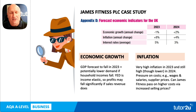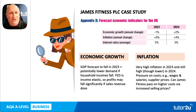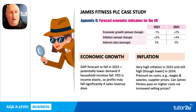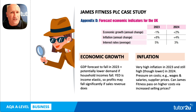Going back to the case study, this is a good example of how we can use appendix data to help provide context. The question explicitly asks us to use that data here. Appendix D had some forecast economic indicators for the UK. It made reference to two in particular. Economic growth — the annual change in GDP — is forecast to be minus 1% in 2023, so a reduction in the value of the economy, then plus 2% in 2024. The inflation data shows plus 8% forecast for 2023 and plus 4% for 2024. That doesn't mean prices are falling — they're still increasing, just not by as much in 2024.